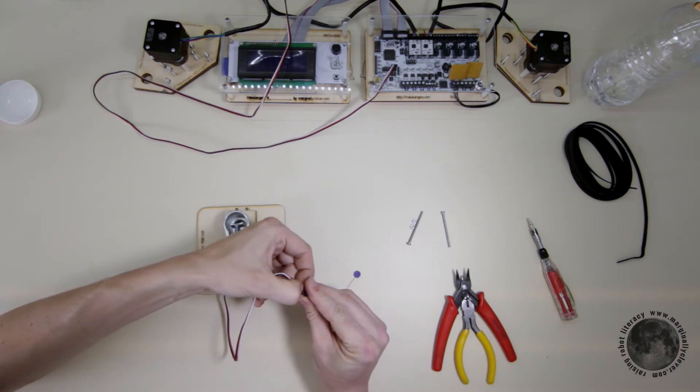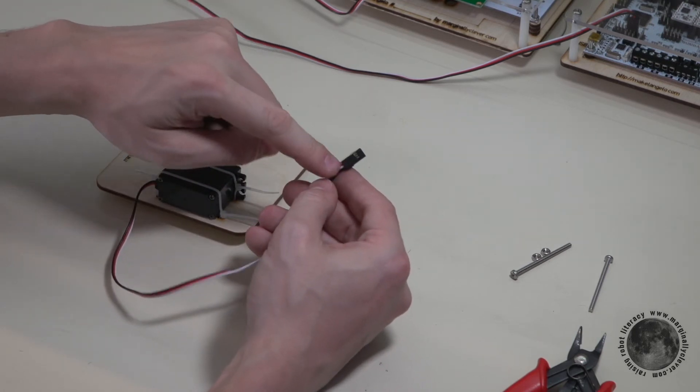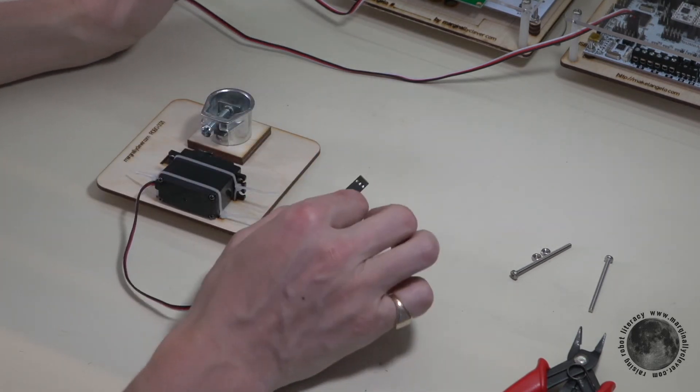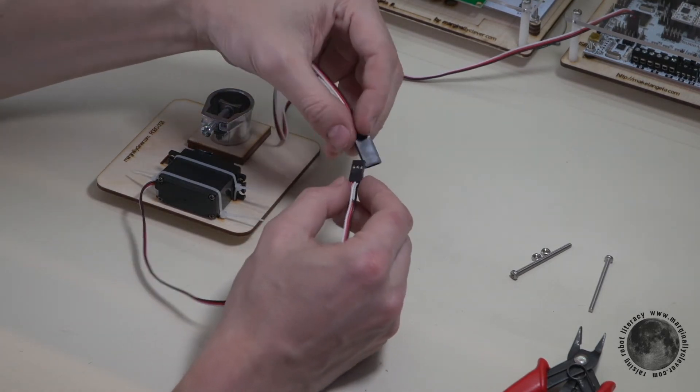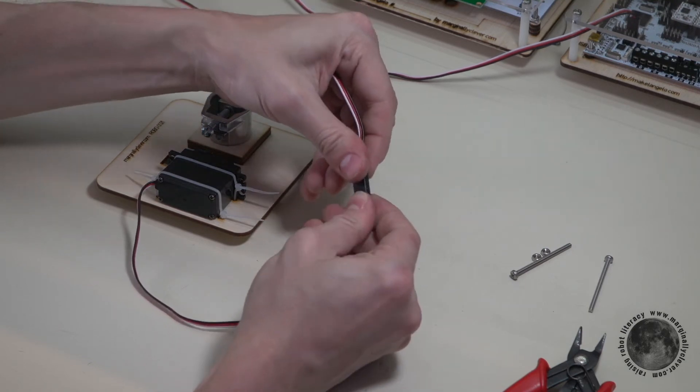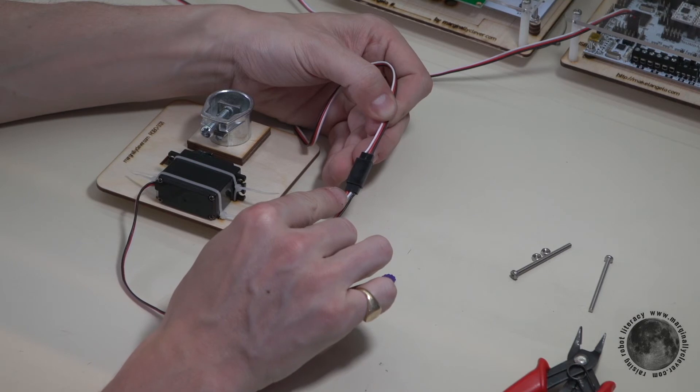There we go. So they're reversed at this end. And again, that's only for the Michelangelo 3. When you connect that together, match the black wires together. Notice black and black are on the same side.